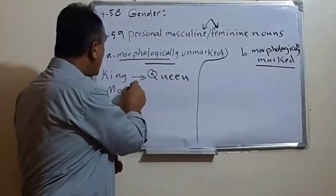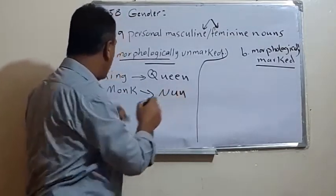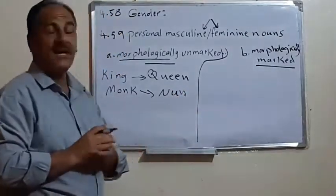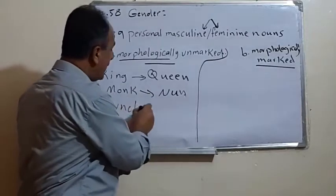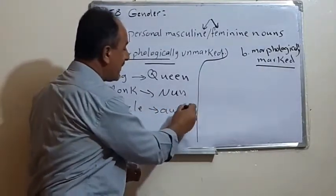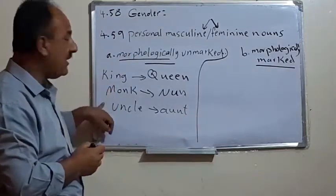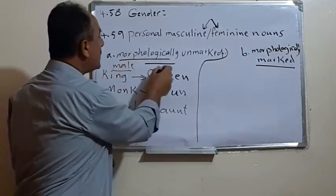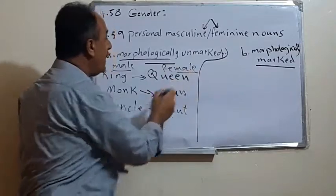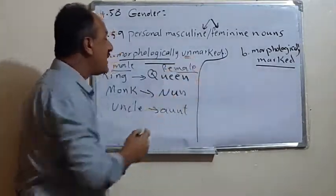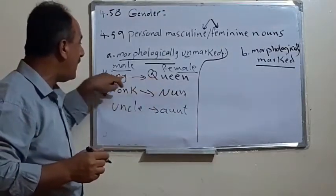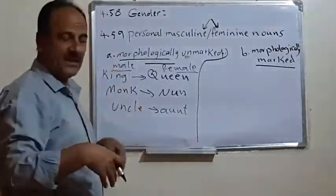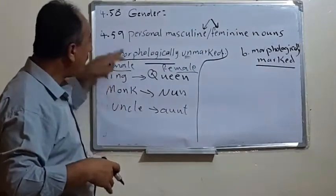Similarly, we have 'monk' and 'nun' — again, no relation between the two words. We have 'uncle' and 'aunt'. These pairs represent masculine and feminine, but the words are entirely different. Other examples include 'father' and 'mother', 'gentleman' and 'lady'. There is a long list of such pairs, and that is why we call this category morphologically unmarked.